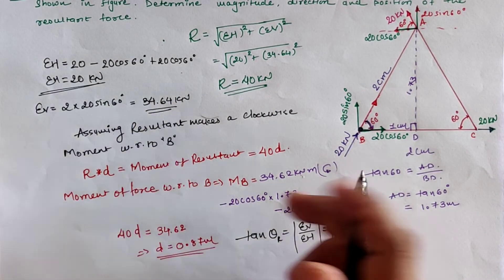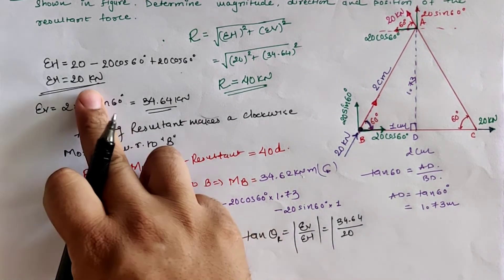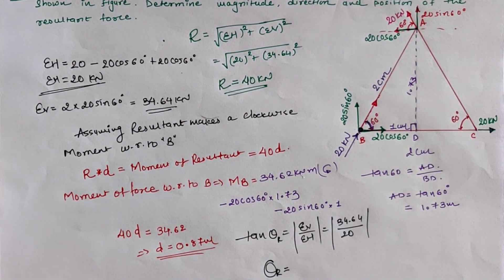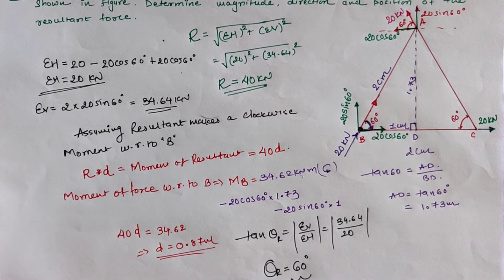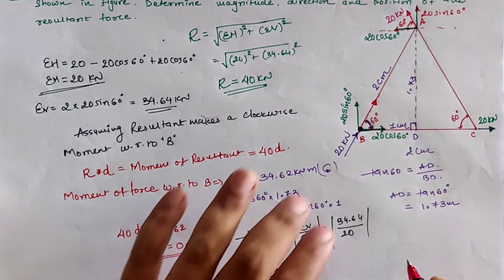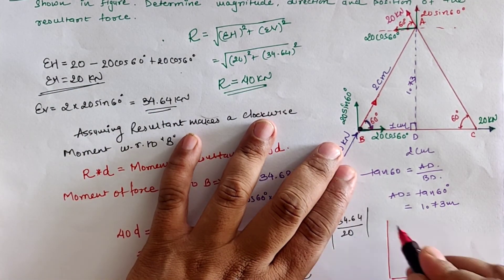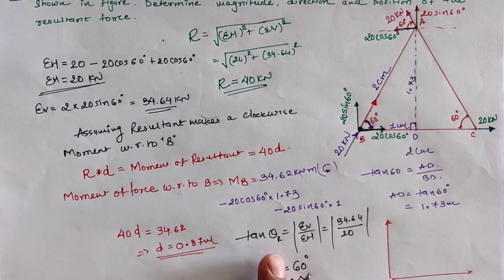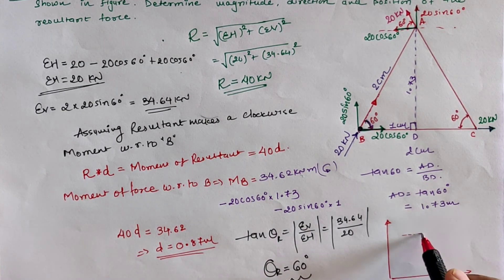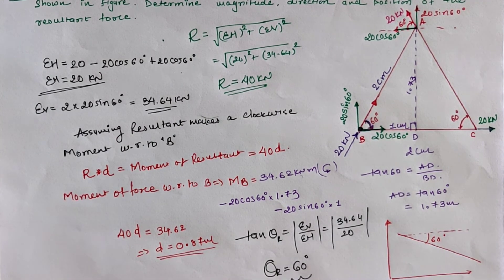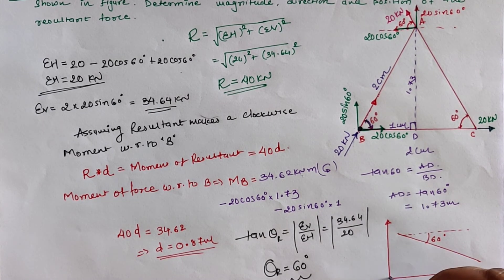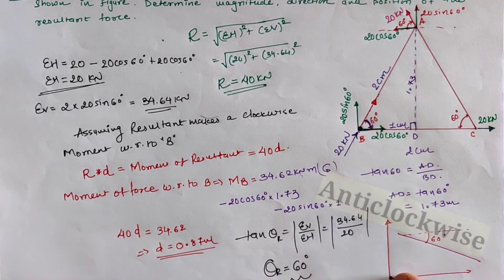Sigma V is 34.64 divided by Sigma H of 20, so theta R equals 60 degrees. This means the resultant makes an angle of 60 degrees with the horizontal axis. Looking at the resultant in the coordinate system: Sigma H is positive and Sigma V is positive, so the resultant lies in the first quadrant. With the horizontal axis parallel to X, the resultant is at 60 degrees from horizontal.